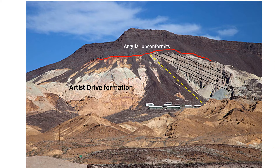Where did those black rocks come from? Well, they fell down from above, landing in a steep pile at the base called a talus cone. Are those two more talus cones to the right? Well, they're composed of sand and gravel and they look out of place — that's because they are mine tailings left behind by the miners.